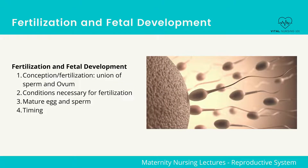Fertilization and fetal development. The first stage begins with conception, which is fertilization. This involves the union of sperm and ovum. In order for fertilization to take place, there are conditions that must be met.